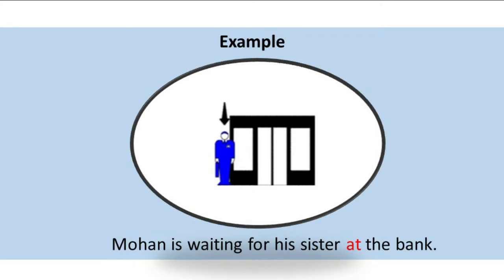Let us understand the preposition 'at' with the help of this example: Mohan is waiting for his sister at the bank. Bank is a specific place and Mohan is standing at a specific place, so we have used the preposition 'at'.